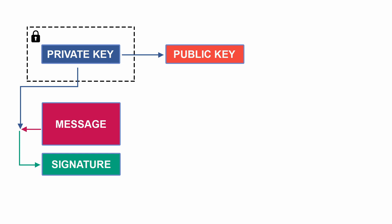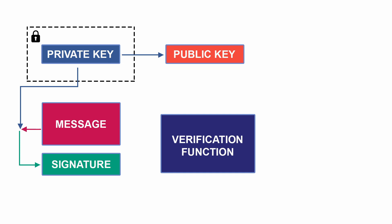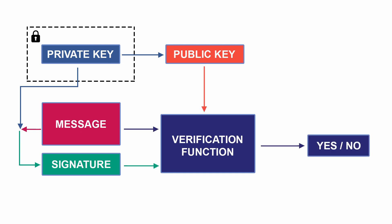The receiver of this message will receive both the message and the signature. Now the question is: how does the receiver verify that it was indeed you who signed it? That's where the public key comes in. In blockchain there is a verification function in the algorithm where anyone who has the message, the signature, and the public key of the message sender can put them into the verification function.